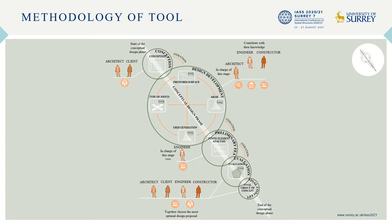The orange circles represent the design activity categories used in the respective stage. In the first stage — conception — the design essence should be defined. In the next stage — design development — different design concepts should arise, where four categories have been developed to support the process with a focus on sustainability: freeform surface, mesh, grid, and type of joints. The architect is in charge of this stage where the engineer and constructor are implemented and contribute with their knowledge, supporting a more integrated design process. Then comes the preliminary finite element analysis stage, followed by evaluation where the concept shall be evaluated by all stakeholders and a final concept chosen. The five categories with a tool mark indicate they are part of the digital constructability tool and have components attached to them.